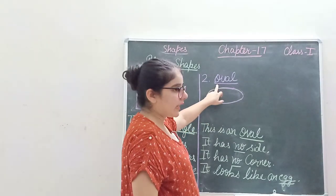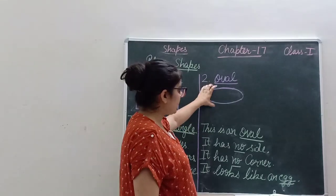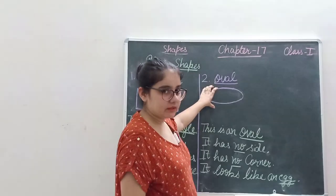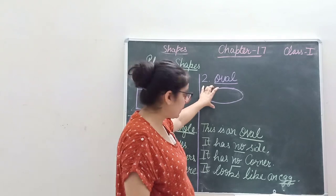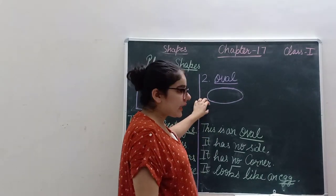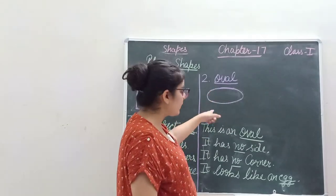That is an oval. You can see it looks like an egg. Egg is an example of oval. There is no side. It has no side and no corner.